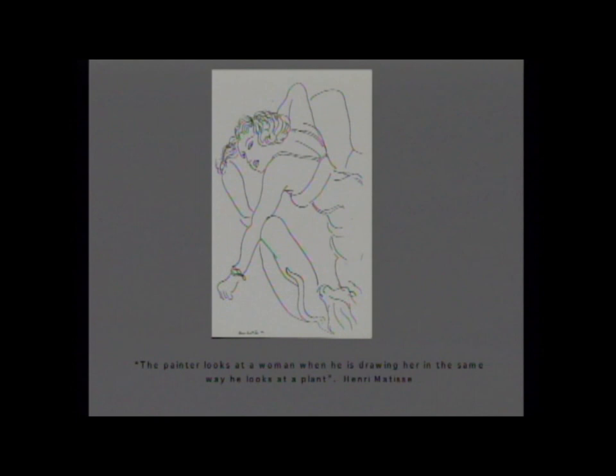Here's Matisse. Look at her eyes, look at the facial expression. Matisse said, 'The painter looks at a woman when he is drawing her in the same way he looks at a plant.' Look at the expression on her face, and then the closest I can come to a Matisse plant was a vase of flowers — charming, but expressing an entirely different feeling.